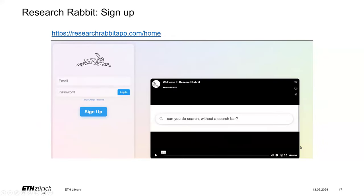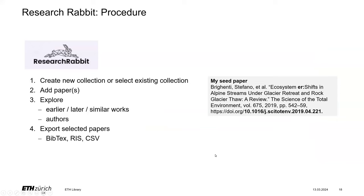After this theoretical look at things, let's move forward to the practical application. Today I would like to demo Research Rabbit — a tool that uses these networks to find interesting literature. You have to sign up to use this tool; it is free of cost and you can use any email. The procedure is always the same: you create a collection or select an existing one, add a seed paper by copying and pasting the DOI, explore, and then export selected papers to your reference manager.